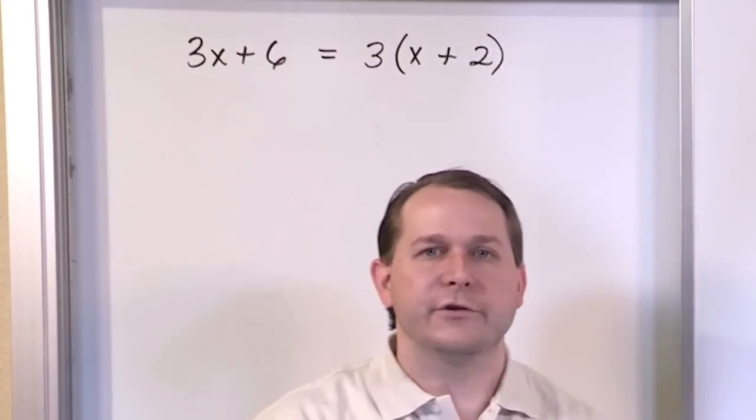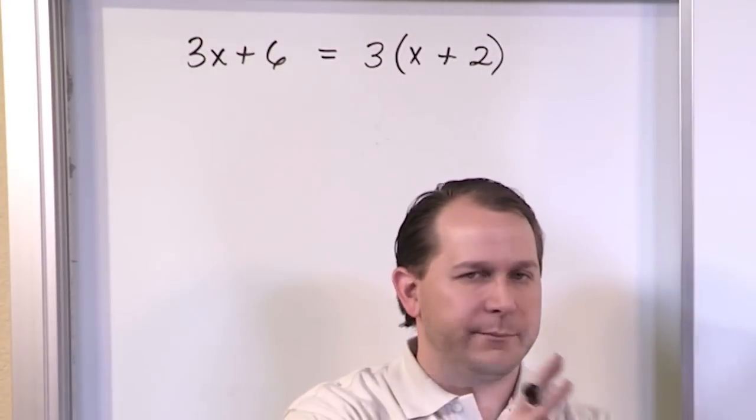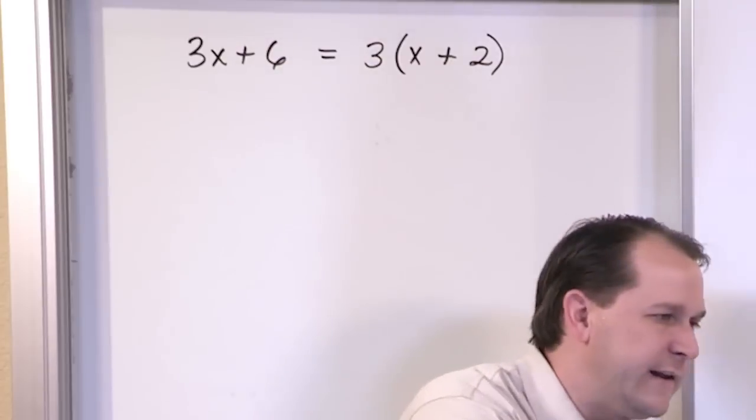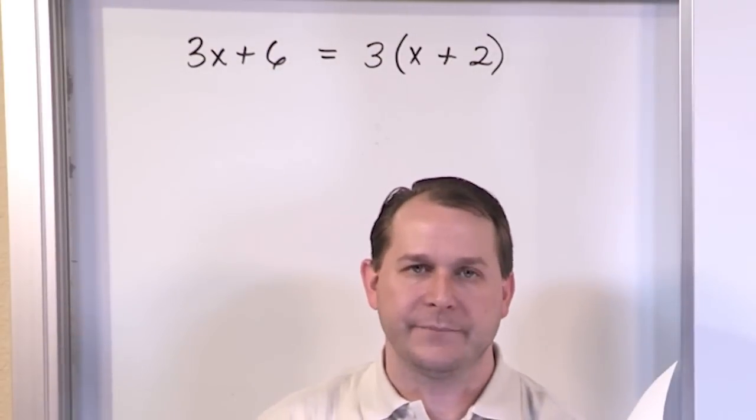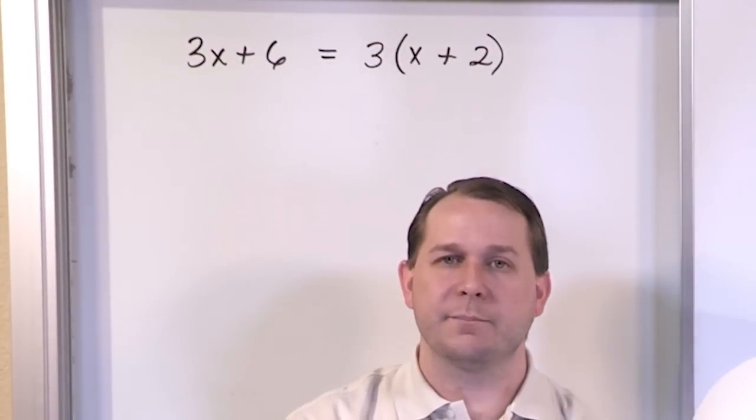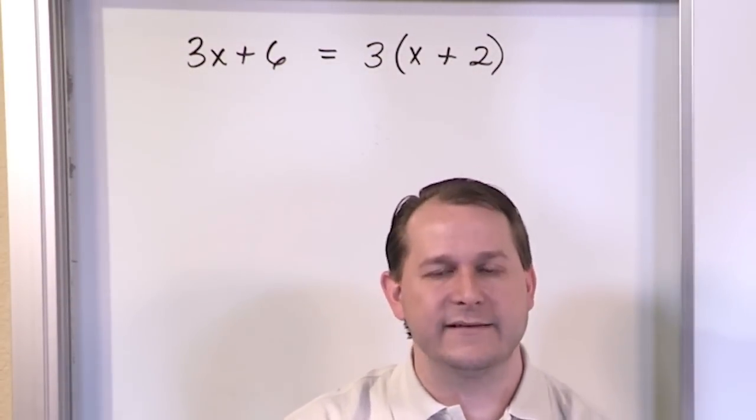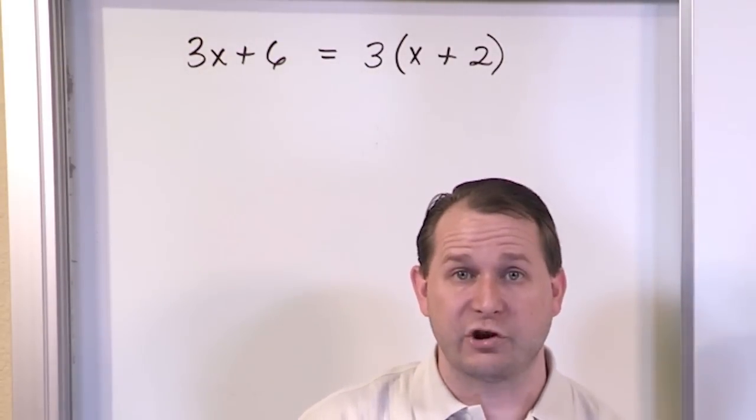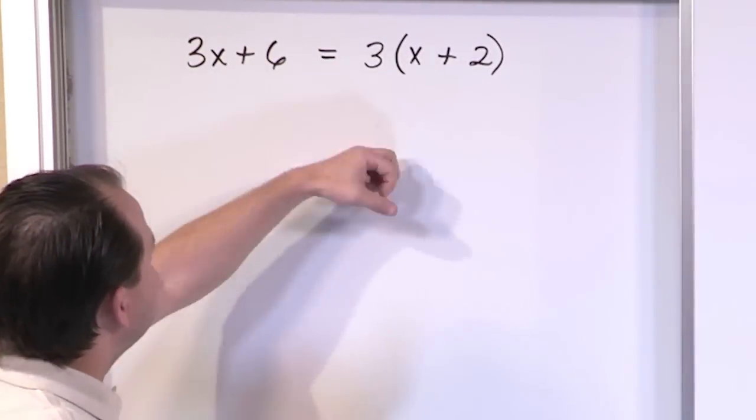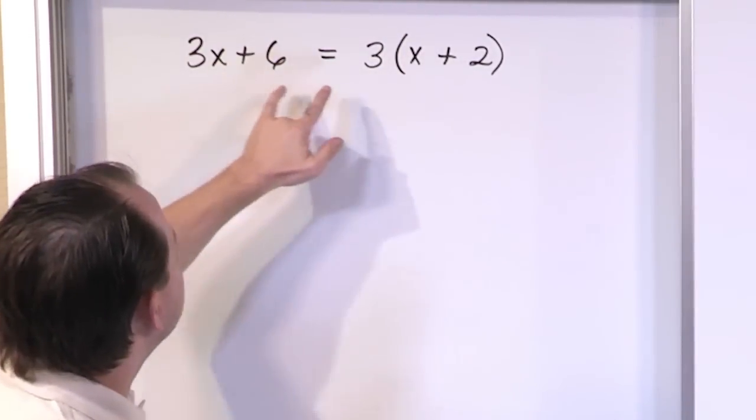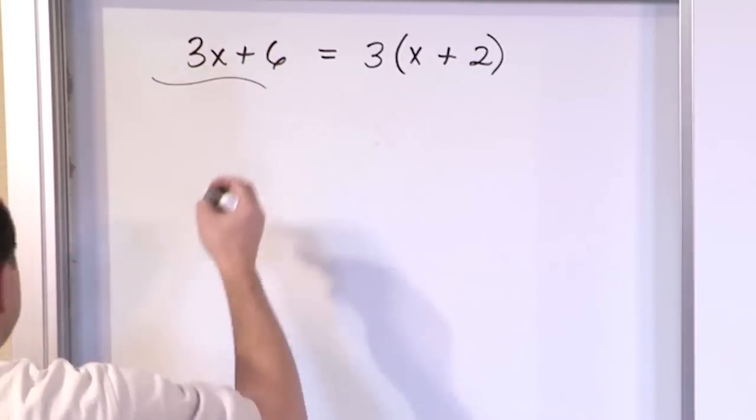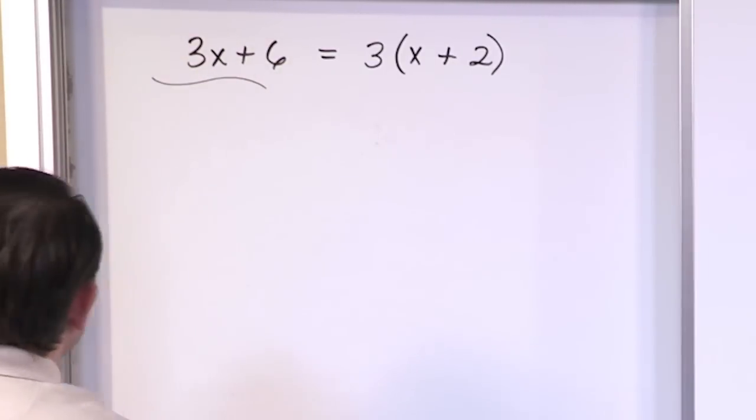So when you factor an expression, you're looking between your terms, you're trying to find out what's common, and you're trying to reach in there and pull everything common out. And then whatever's left over inside the parentheses has to make sense, so that when you do the reverse multiplication again, if you do it, check it, you're going to get back what you started with. That is factoring. So let's do a million problems here to make sure you understand. But that is the basic concept.